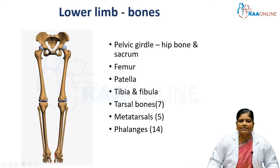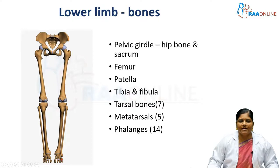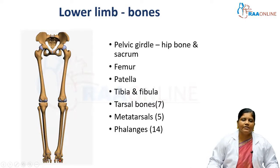The lower end of the tibia has a prominence called the medial malleolus, and the lateral aspect of the fibula has the lateral malleolus. Together they form the ankle joint. The foot consists of tarsal bones, metatarsal bones, and phalanges. There are seven tarsal bones and five metatarsals, named from medial to lateral. The great toe has proximal and distal phalanges; the other toes have proximal, middle, and distal phalanges.